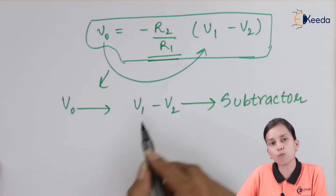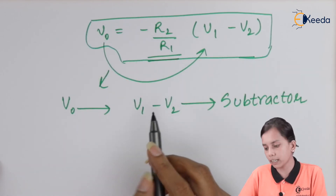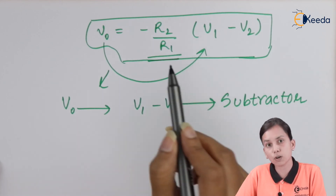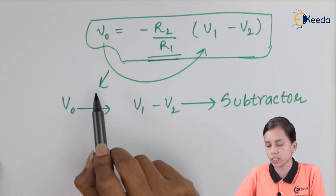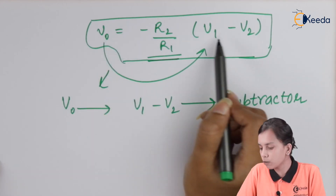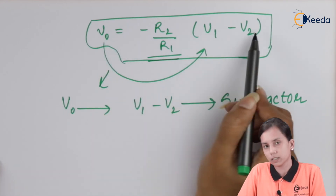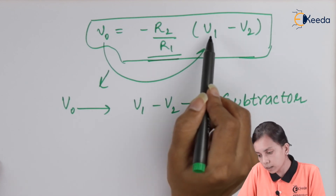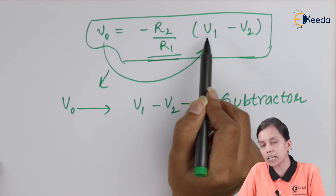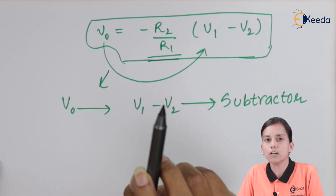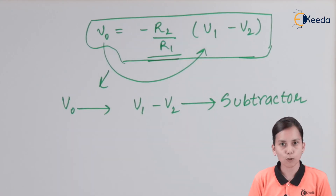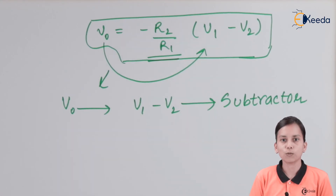One more interesting point: this is the basic operation of the op-amp itself. It is also the basic operation of a differential amplifier — it always equals the difference between the two input terminals when signals are applied at both the inverting and non-inverting terminals. Thank you for watching this video. Stay tuned with Ekeeda and subscribe to Ekeeda.